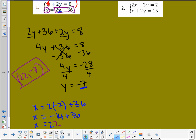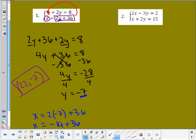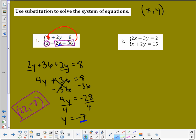That's the solution to my system. Let's try number 2. When I take a look at number 2, I have x + 2y = 15 on the bottom. And I have 2x - 3y = 2 on the top. Now, right away, I look for a variable that's alone. And in number 2, I don't actually have one. None of the variables are by themselves right now. So, I need to work on getting one by itself.